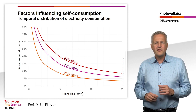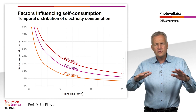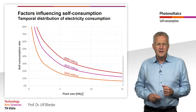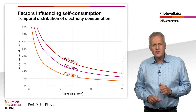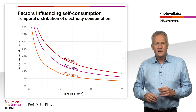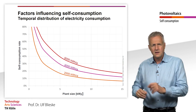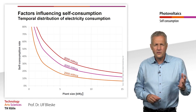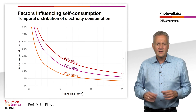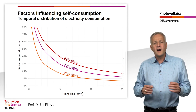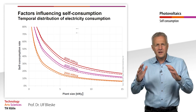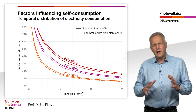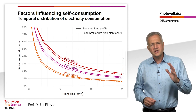In addition to the level of annual consumption, its distribution over day and season also has an influence on the level of self-consumption. The biggest influence comes from the amount of electricity consumed in the late evening and the night. The self-consumption rates shown here are all based on the standard load profile. If instead the calculation is based on a load profile with a high nighttime share, the self-consumption rate is several percentage points lower. Overall, the level of electricity consumption has a much greater influence.